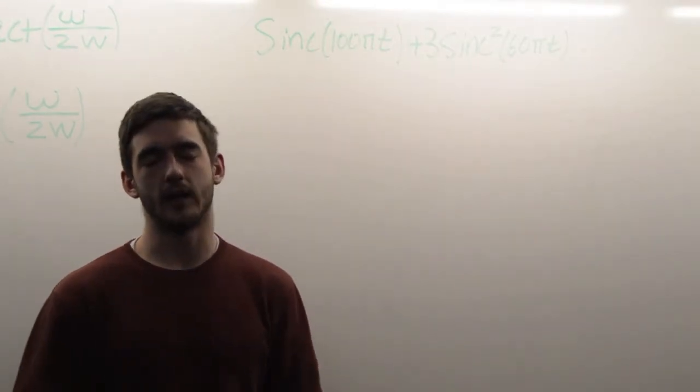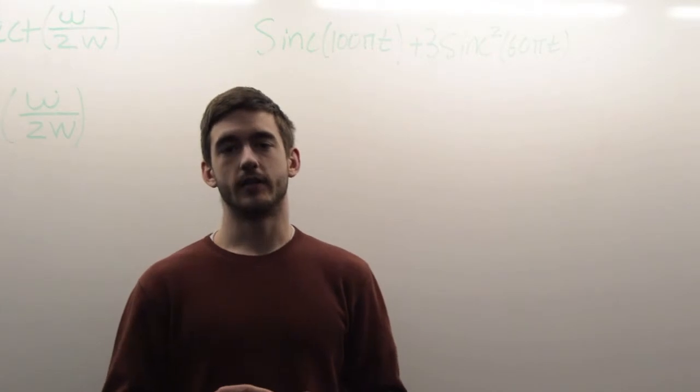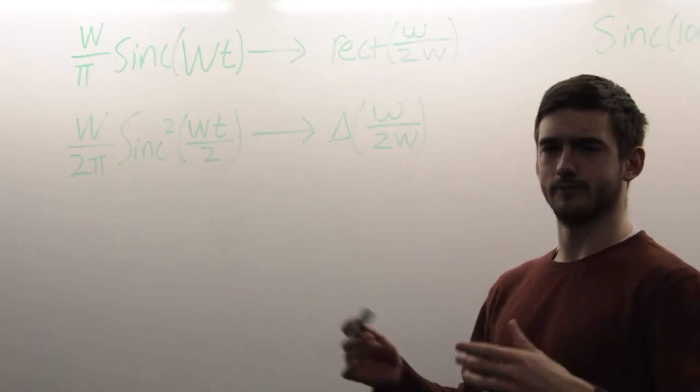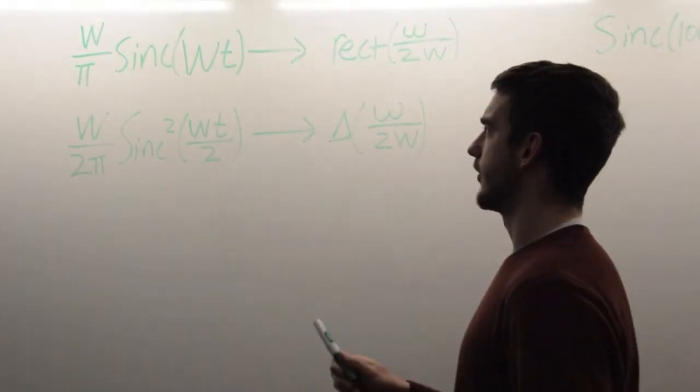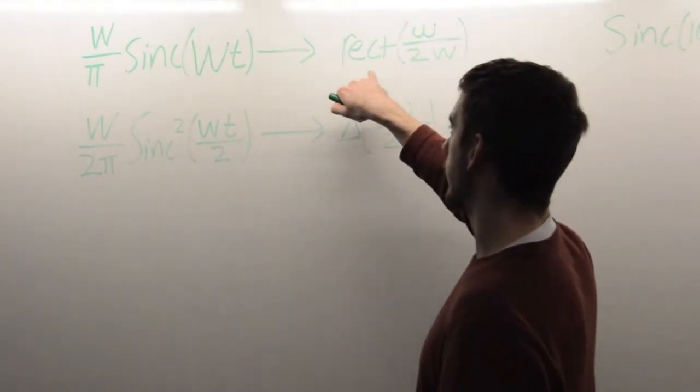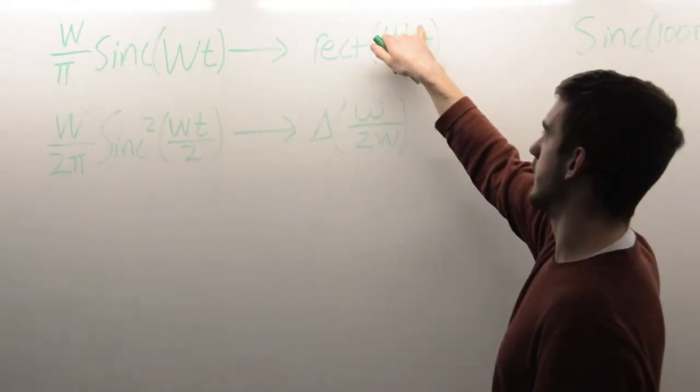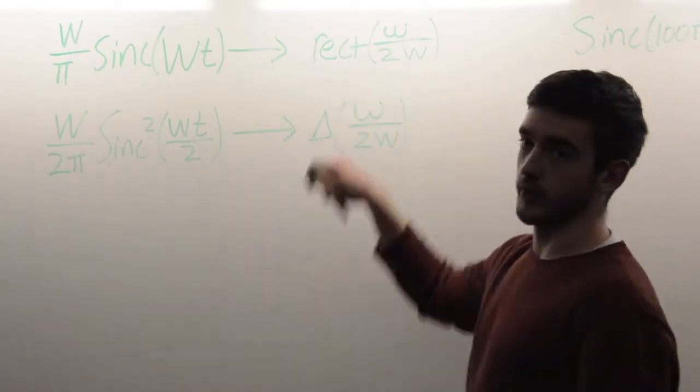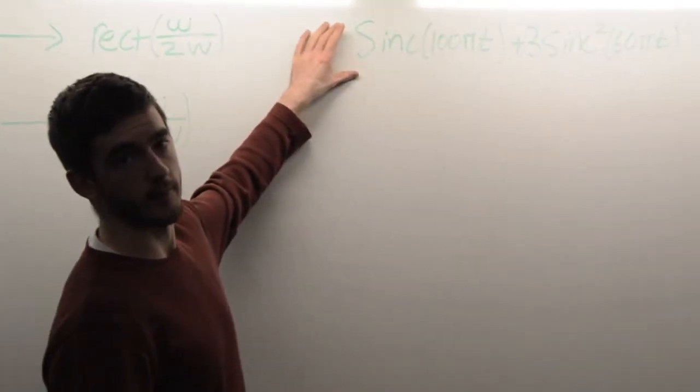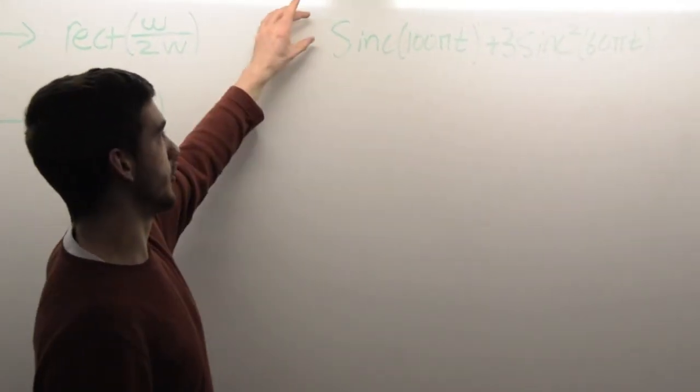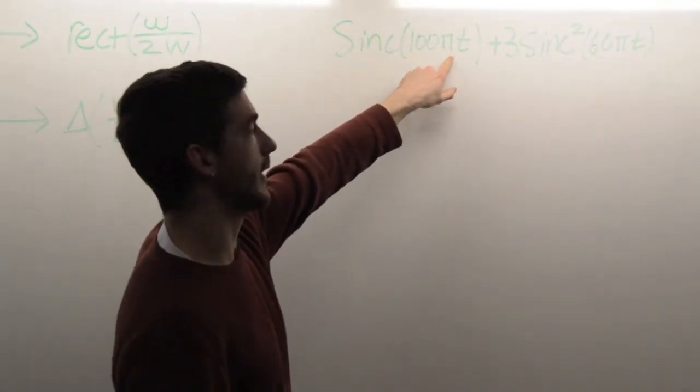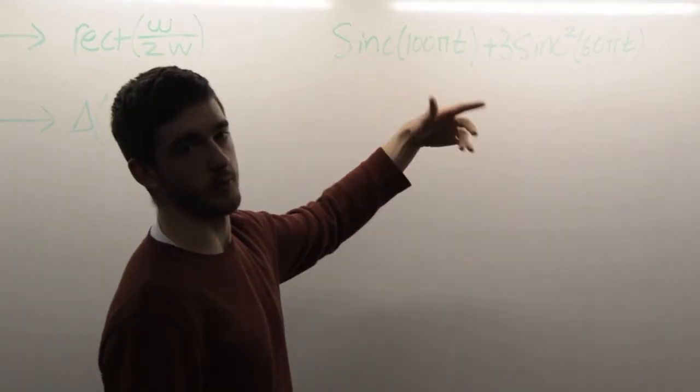There's a really helpful page 252 of your book that lists out some nice properties of the Fourier transform, or pairs. One of them is that if you have w over pi times sinc of wt, its Fourier transform is the rectangle function of omega over 2 times w. In our case, we don't have this w over pi, it's just 1, so you can think of that as multiplying by pi over w. Our wt is 100 pi times t, so we know that w is 100 pi.